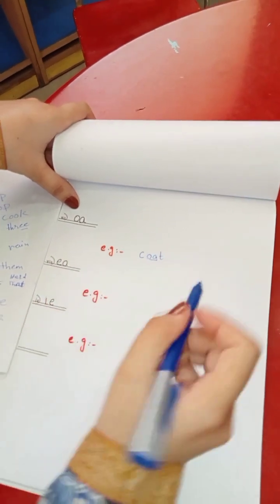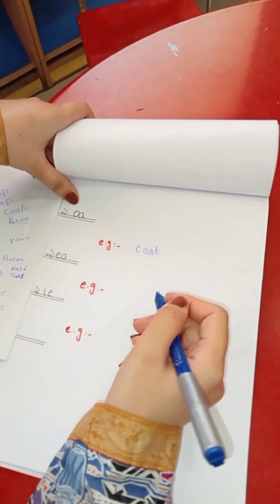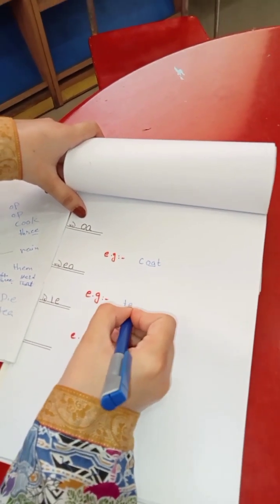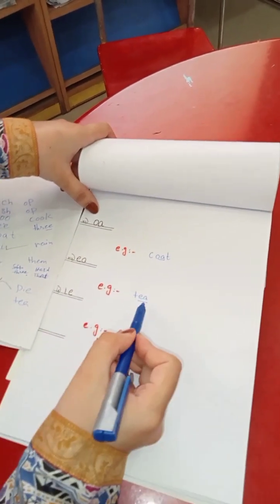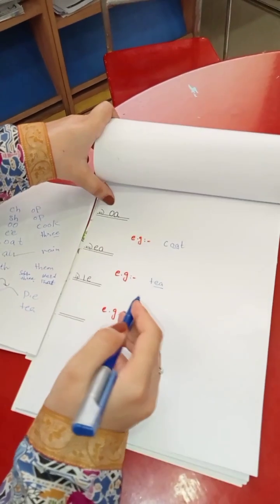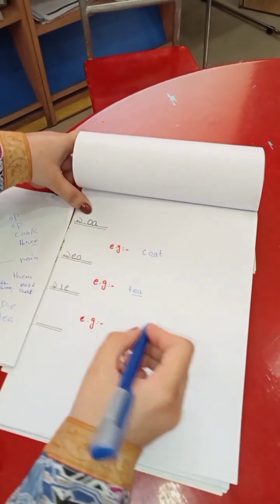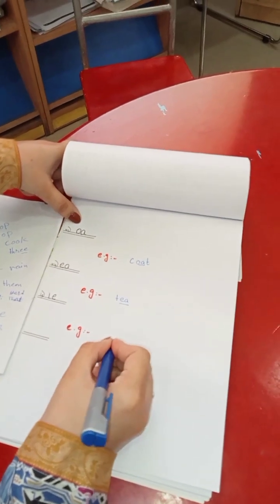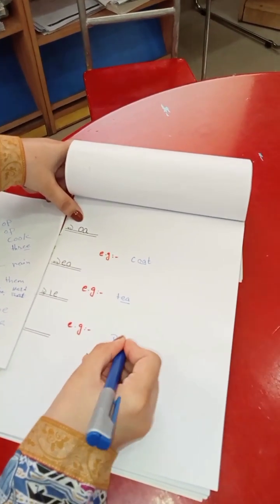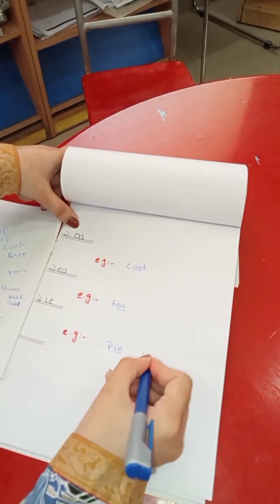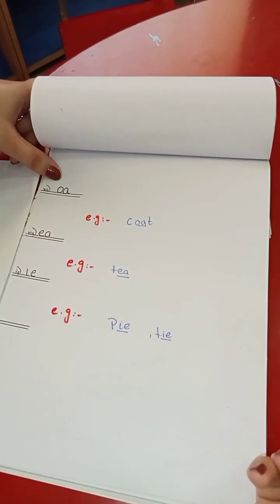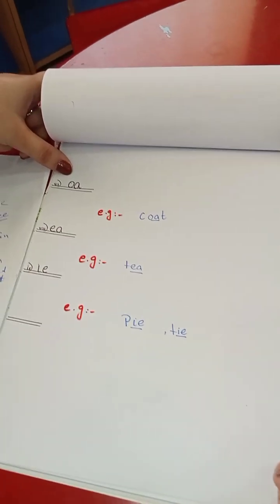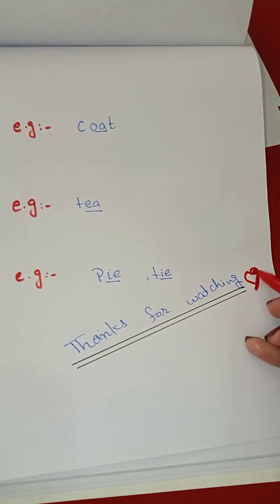This makes a new sound called 'ee'. Like 'th-ie-t' — here is a digraph IE. The next digraph is IE. Like 'p-ie' — it will become 'pie'. And 'th-ie' — it will become 'thai'. So these were the examples of digraphs.